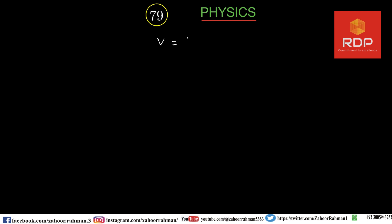Hello and welcome to Rahman Digital Production. This is lecture number 79 of physics. Yesterday we learned a very important formula: speed is equal to frequency times lambda, which is the wavelength. Today we are going to learn the usage of this formula in the form of example 13.1.